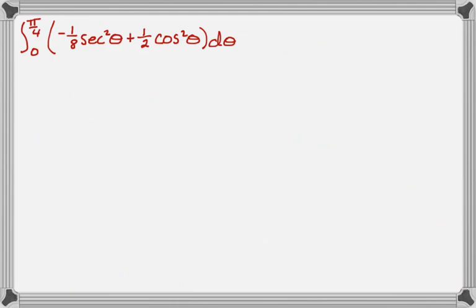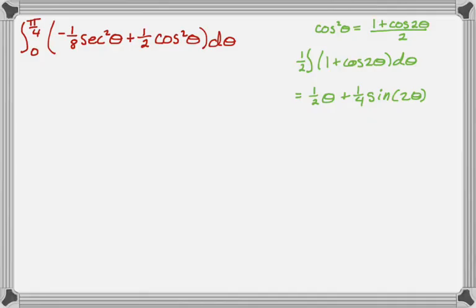Here we go. So to integrate this, secant squared is easy, right, because the derivative of tangent is secant squared, so that one's good. Cosine squared, I'm going to use an identity. I know that cosine squared of theta is 1 plus cosine 2 theta over 2, so if I were to integrate cosine squared, that'd be the same as integrating that 1 half. So pull the 1 half out, integrate, you get 1 half theta plus 1 fourth sine of 2 theta.